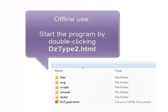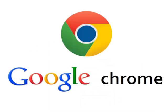To run the software offline, click on the file dztype2.html. The recommended browser is Google Chrome.